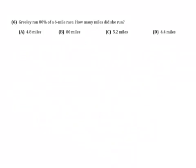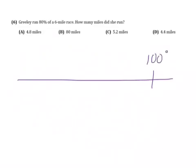Question number six. Greeley ran 80% of a six-mile race. How many miles did she run? Well, 100% of the race is six miles, and we want to find out what 80% is.